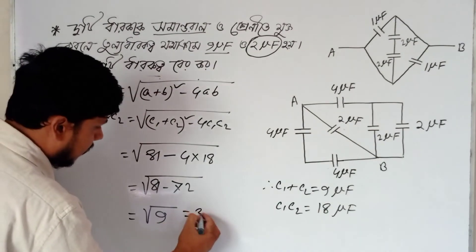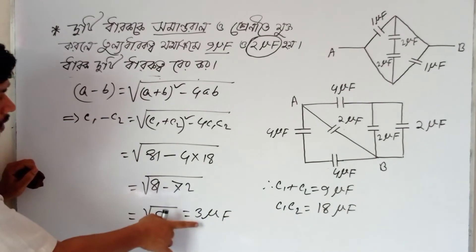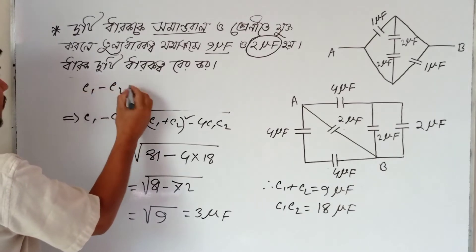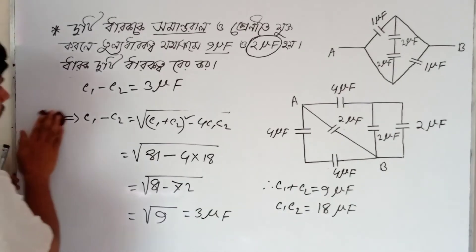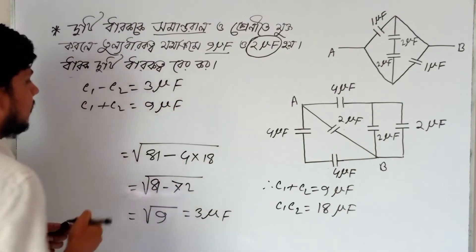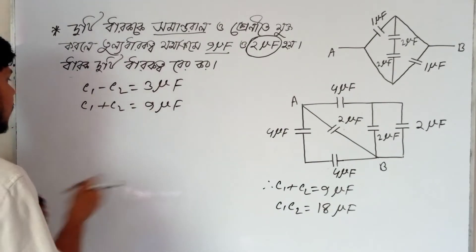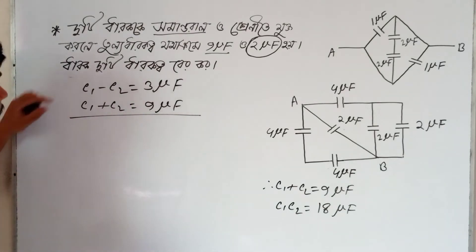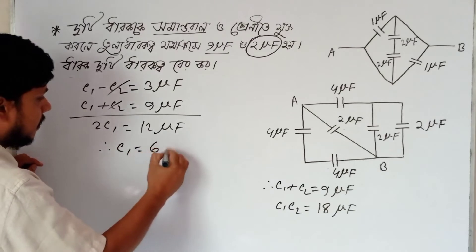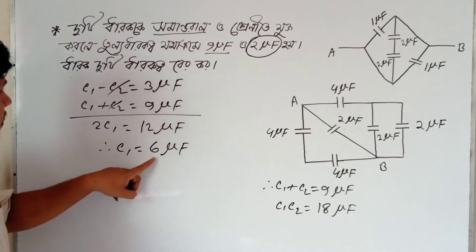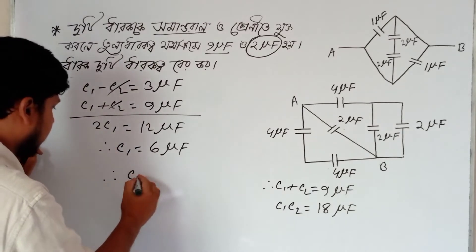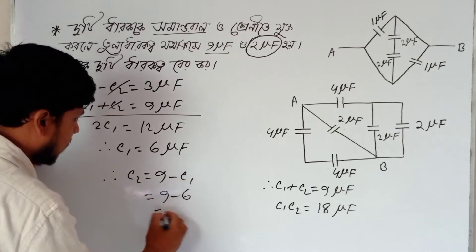Root over 9 — do you know what that is? It's 3. So C1 minus C2 equals 3 microfarad. And C1 plus C2 equals 9 microfarad. Adding the two equations: C1 equals 6 microfarad. Then C2 equals 9 minus C1, which is 9 minus 6 equals 3 microfarad.